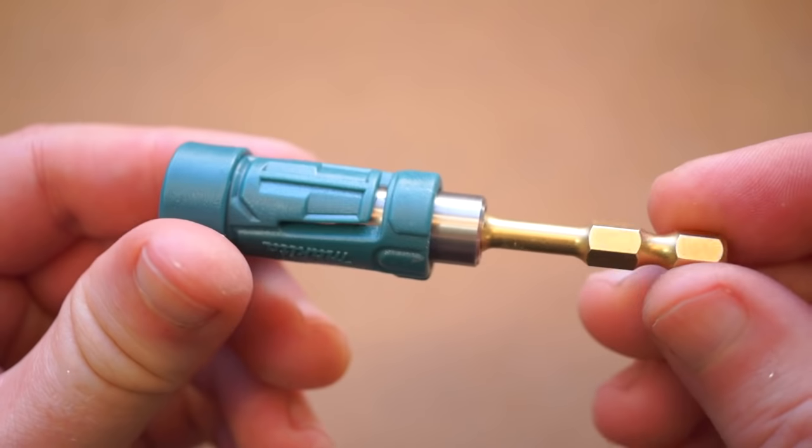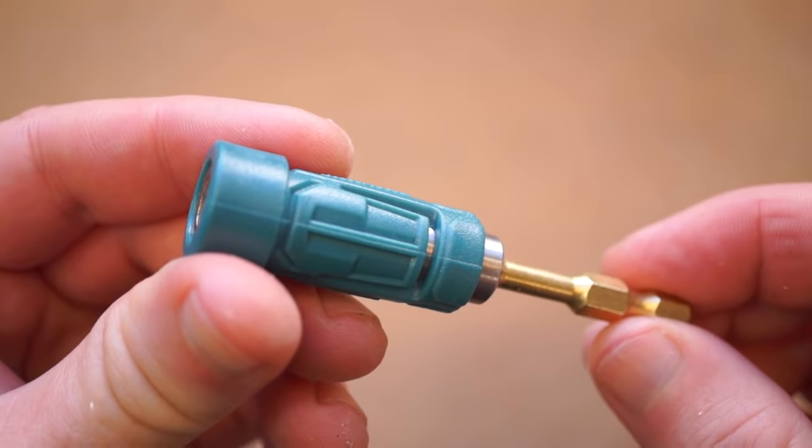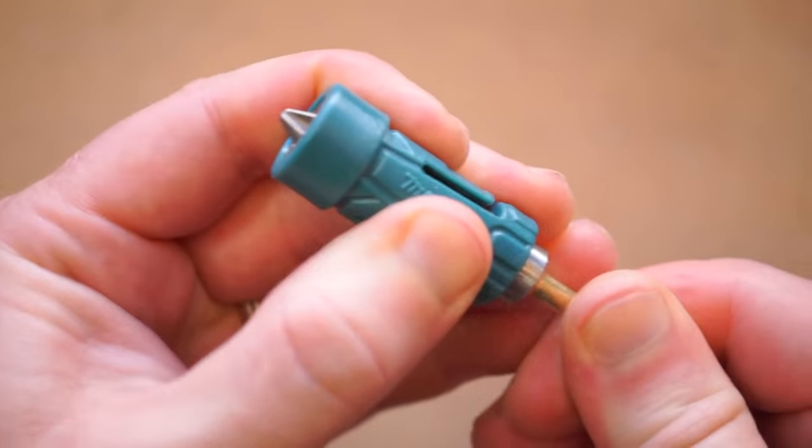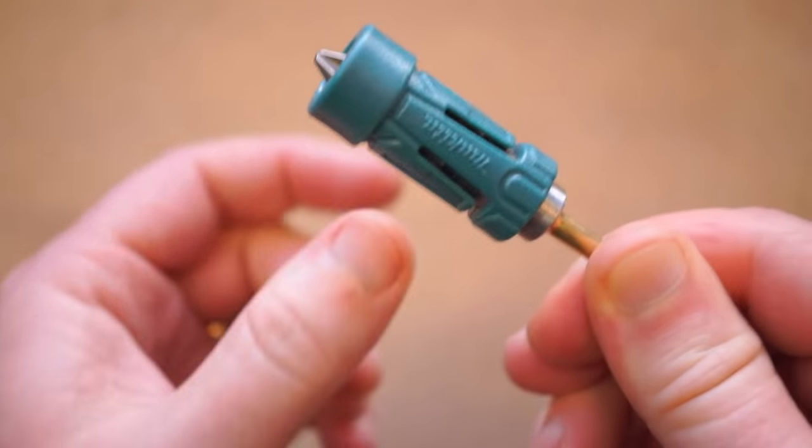Next up, for $5, this Makita magnetic bit holder. You pop this into your drill or impact driver, load in the bit, and the magnetic collar around the tip holds screws tight.